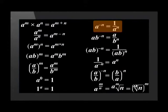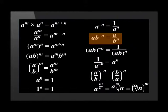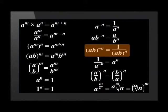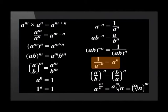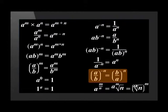a to the power of negative n is equal to 1 over a to the power of n. ab to the power of negative n is equal to a over b to the power of n. ab in brackets to the power of negative n is equal to 1 over ab in brackets to the power of n. 1 over a to the power of negative n is equal to a to the power of n. A over B in brackets to the power of negative N is equal to B over A in brackets to the power of N.